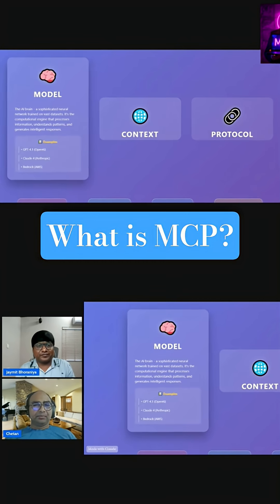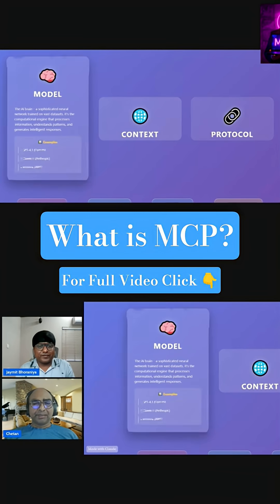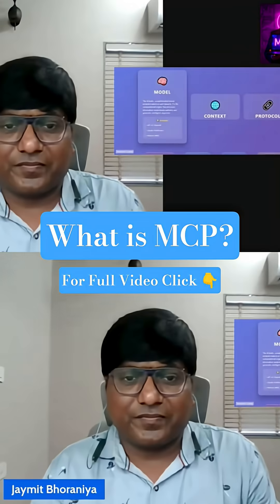Since that time, models have evolved a lot. The latest versions are GPT-4.1, Claude 4, and Gemini 2.5. These are fantastic models that can not only write code or text, but can also generate audio and video — multi-modal capabilities. So a model is basically a neural network capable of text generation, code generation, audio generation, and more.